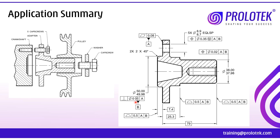So from the two possibilities — feature or feature of size — we use it as feature of size and give the MMC modifier. After controlling this, we establish the second datum, which is datum B.